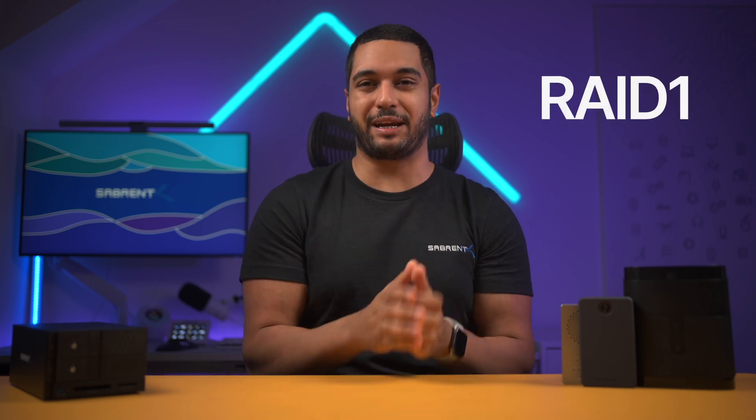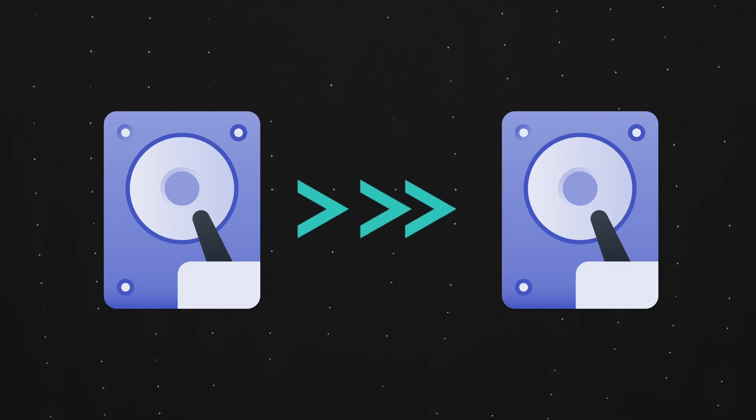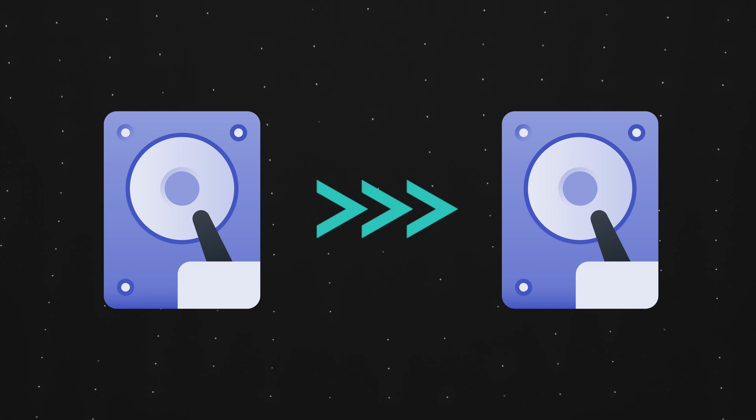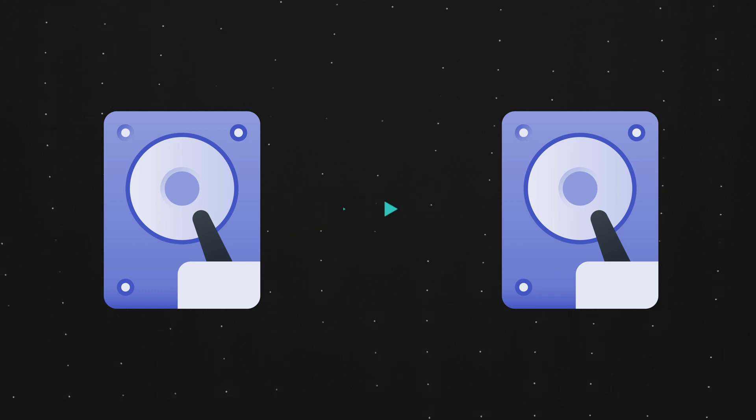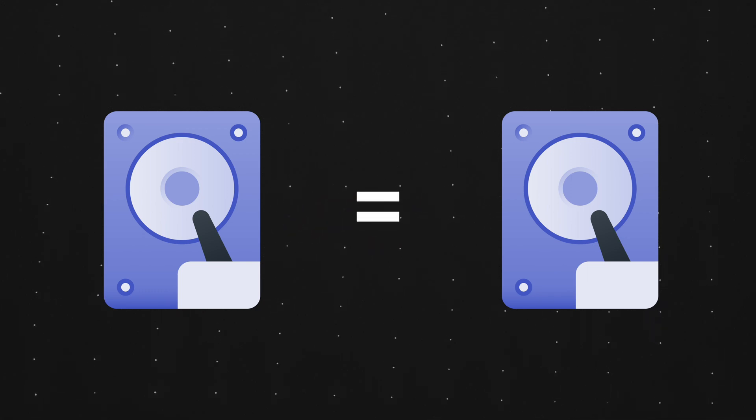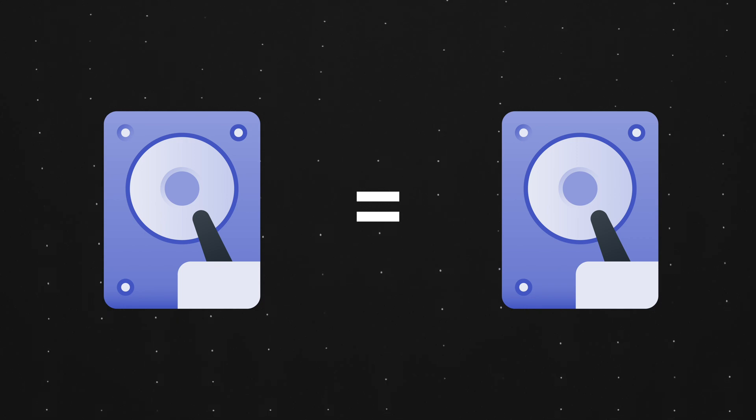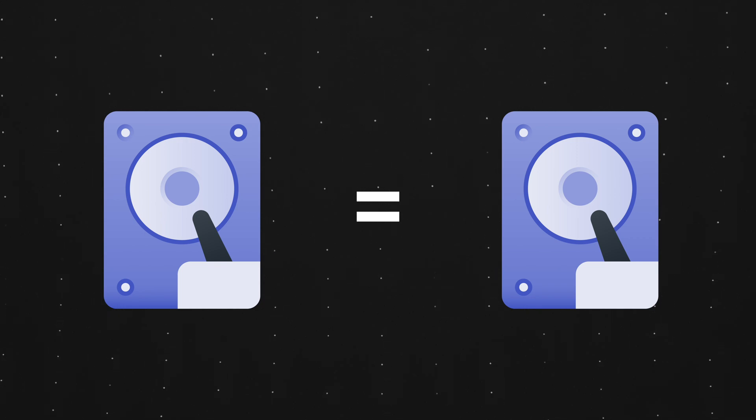In certain RAID configurations, a disk or set of disks contain parity information that allows them to rebuild data in the event of a drive failure. This brings us to the second level of RAID, also known as RAID 1. In RAID 1, data is mirrored from your main disk to another disk, but no parity or striping is happening. So two drives in a RAID 1 configuration will be copying each other's logical picture, so in case one physical drive goes down or out of action, the data is still available to the user.